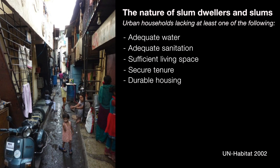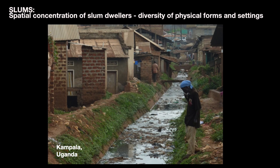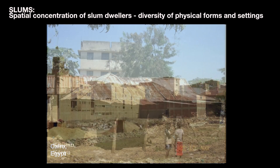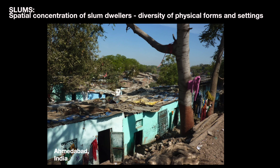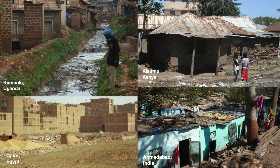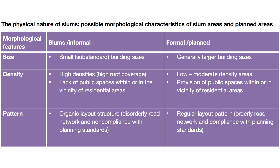When we think about slums, we're thinking about spatial concentrations of slum dwellers. These take place in different contexts with different characteristics. You can see here on these slides four different situations from Uganda, Kenya, Egypt, and India, all having a different morphology with different building materials, different densities and types of housing. So when we're mapping, we have to take cognizance of these differences. We're particularly interested in the morphological characteristics of slum areas — the size and density of buildings, and the patterns relating to the degree of order or structure in a particular urban area.